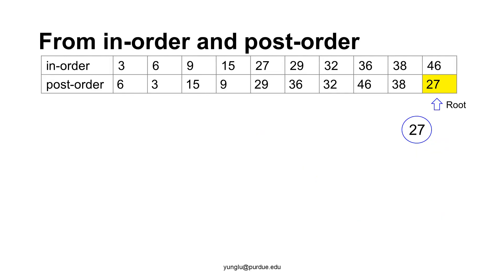First, from the post-order traversal, we know the last node must be the root. Thus, this binary tree's root must be 27.